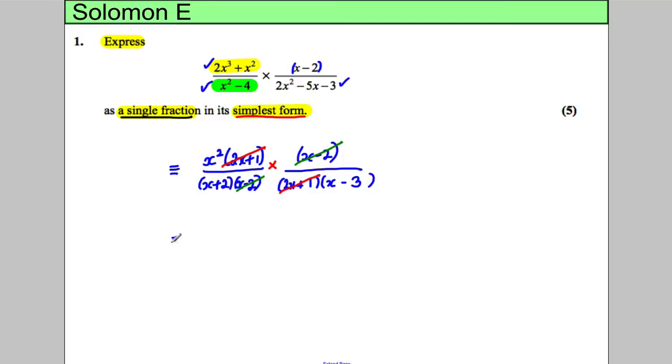I'm going to use the identity symbol here to say this is equivalent to or identical to. This is therefore equal to x² on the top, and on the bottom you're left with (x + 2)(x - 3). This is identical to that and that's in its simplest form.